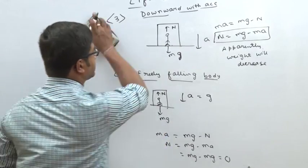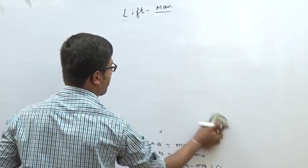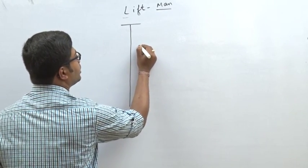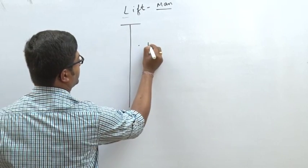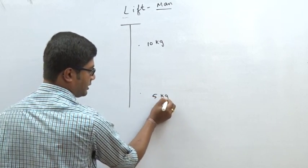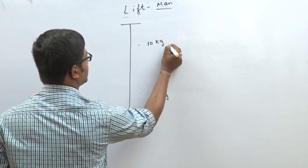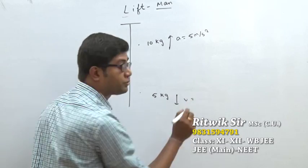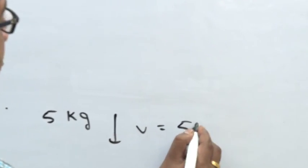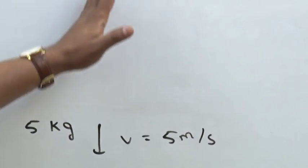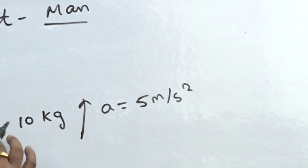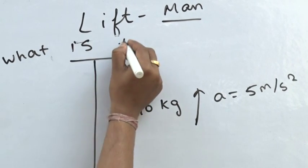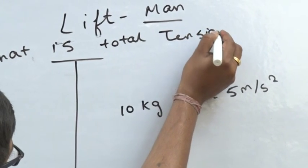Now a numerical problem. Along a vertical rope there are two men. The first man has mass 10 kg and the second man has mass 5 kg. The first man is moving upward with acceleration 5 m/s². The second man is moving downward with uniform velocity 5 m/s — so no acceleration for the second one. We need to find the total tension.